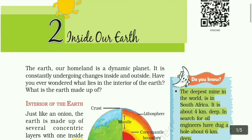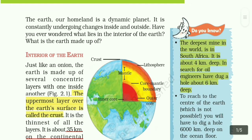Now we will see what we have to do with the earth - the interior of the earth. Just like an onion, the earth is made up of several concentric layers with one inside another.